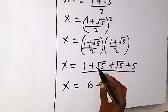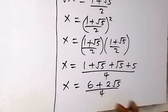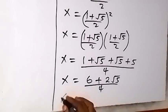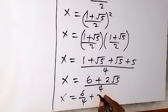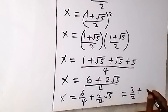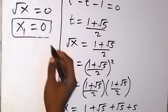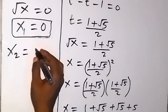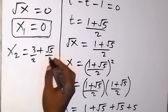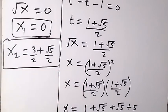Combining: 1 + 5 = 6, and √5 + √5 = 2√5, giving x = (6 + 2√5)/4. Separating: x = 6/4 + (2/4)√5, which simplifies to x = 3/2 + √5/2. Therefore, the two solutions are x₁ = 0 and x₂ = 3/2 + √5/2. Thank you for watching, don't forget to subscribe for more videos, see you in the next class.